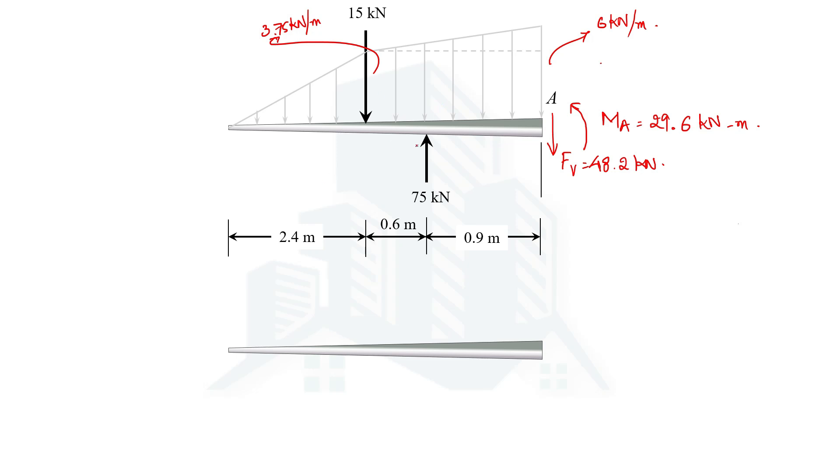Let's start drawing the bending moment diagram for the loading condition shown here. We will determine the bending moment at key locations, including this point, then shift to this point, and at the end at this point. Let's determine the bending moment at this point which is 2.4 meters away from the left-hand side.